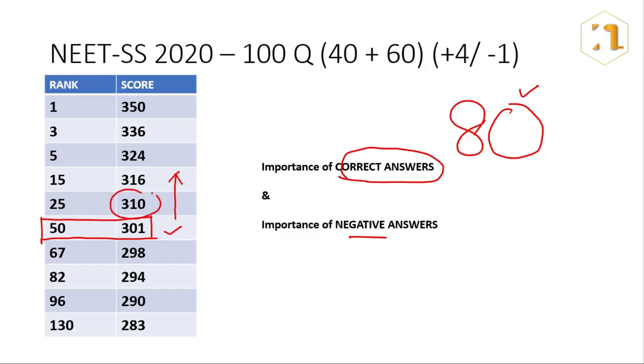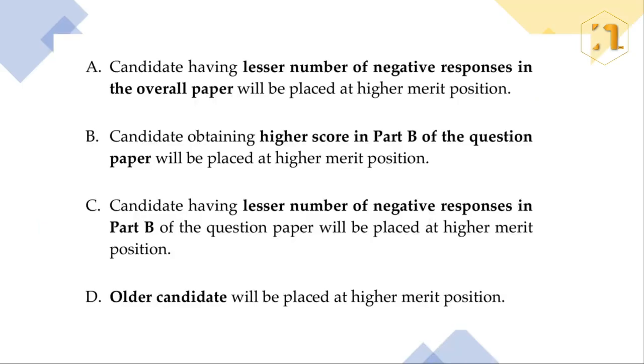Even for a 10 mark, 9 mark difference, you have a difference in rank of 25. And as you go down the crowd starts and you get lost in the crowd. This is a screenshot from the NEET SS 2020 prospectus, and it gives a clear idea about the importance of negative marking. In case of a tie, which is a very common occurrence in our examination, candidates having a lesser number of negative responses in the overall paper are given a higher merit position. And apart from that, the fact that we have to focus all our energy and time on Part B preparation, that is our specialty preparation, is very clearly mentioned in that. Candidates having a higher score in Part B and lesser negatives in Part B are given a greater merit position.